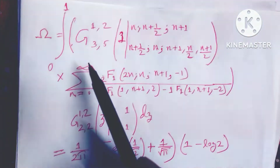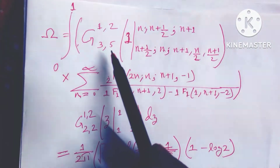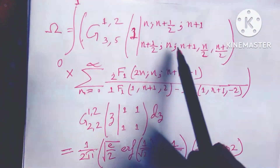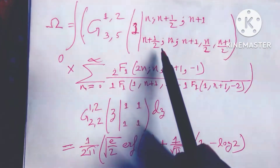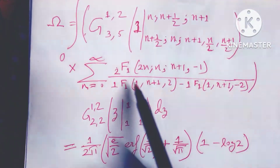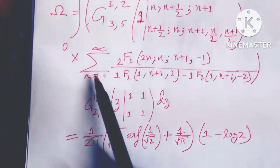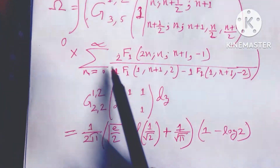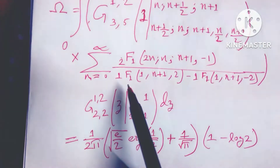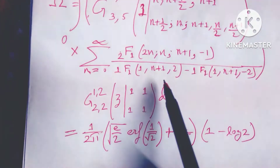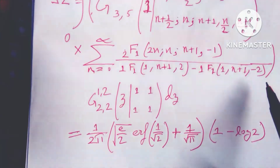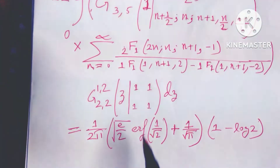Today's problem is: evaluate the integral from 0 to 1 of g(1 to 3/2), involving terms n, n plus half, n plus 1, n by (2n+1), divided by 2, into summation n equals 0 to infinity of ₁F₁(1; n+1; -2) minus ₁F₁(1; n+1; -2).